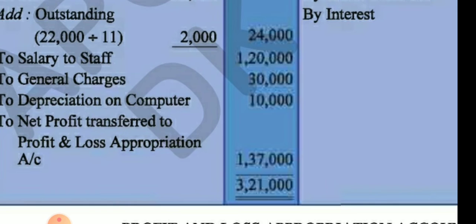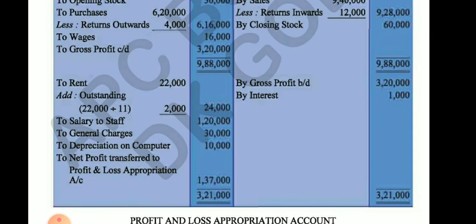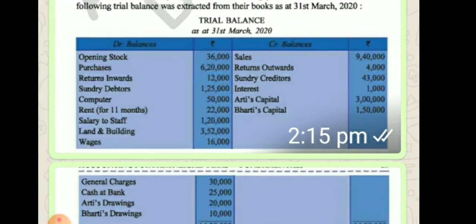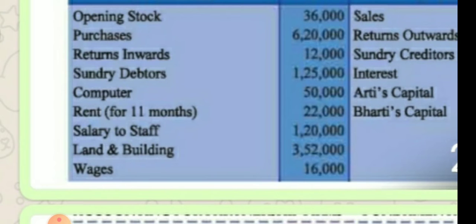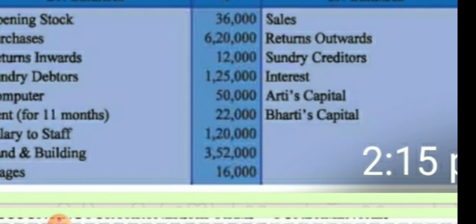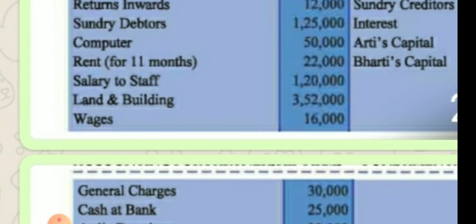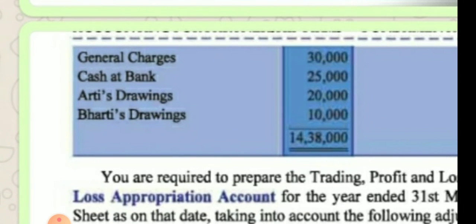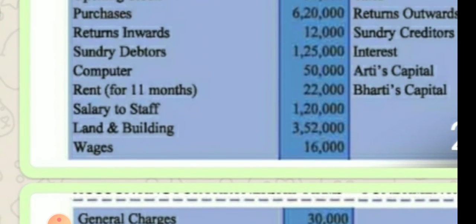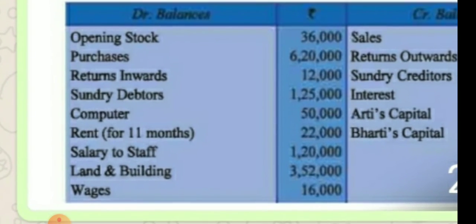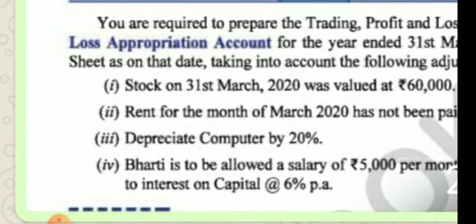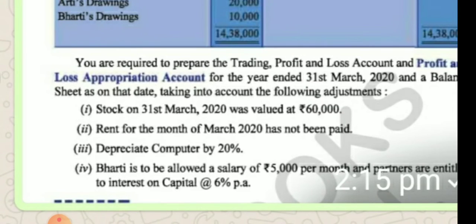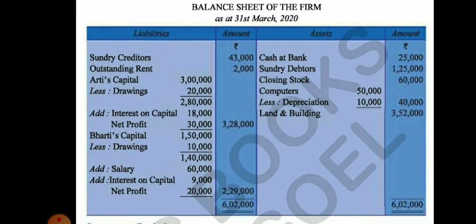The total amount on the credit side is ₹3,21,000. Taking the difference from the debit side gives net profit ₹1,37,000. All expenses related to partners — like salary, interest on capital — are not shown here in the P&L account. Those will be shown in the P&L Appropriation account. Drawing is also not taken here.